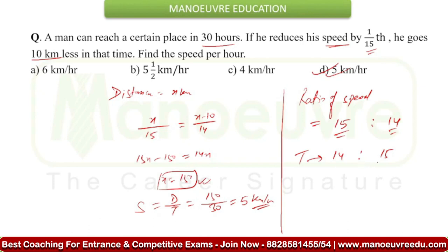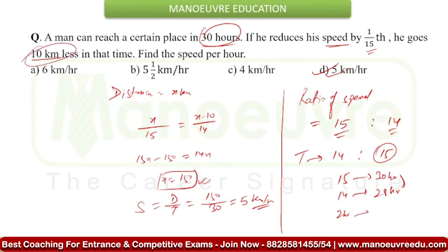The question states that previously 30 hours were taken and now also 30 hours are taken. So the value of 15 units in the time ratio corresponds to 30 hours as given in the question. So the value of 14 units will be 28 hours. In this 2-hour difference, you have traveled 10 km less. So in 2 hours, 10 km less was traveled. Speed is equal to distance upon time — 10 km covered in 2 hours — so the speed is 5 km per hour. This is the answer.